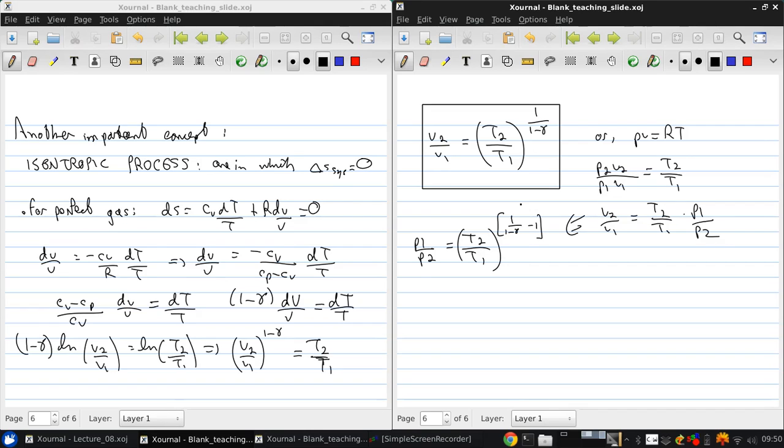And if we simplify the exponent, we get that p2 over p1 is just t2 over t1 to the gamma over gamma minus 1. And so this is for an isentropic process for a perfect gas.